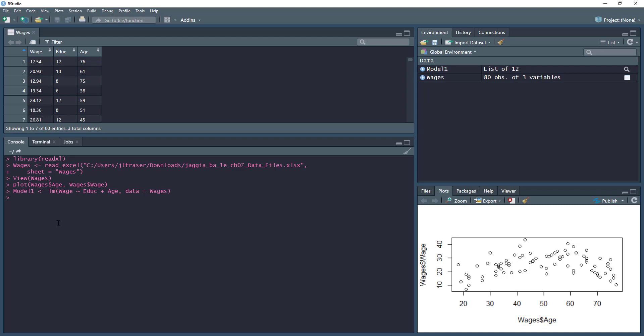Now to create the variable raised to the second power, we're going to create a new object. So in the wages dataset, we call it age2. We're going to use the age variable in the wages dataset and raise it to the second power.